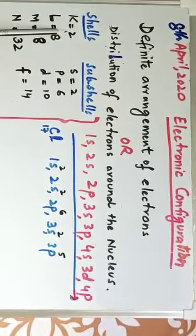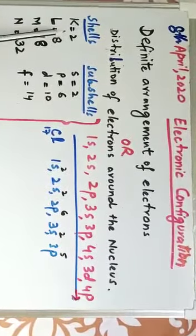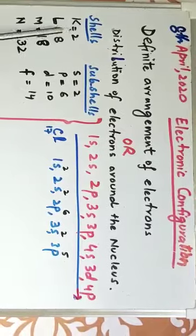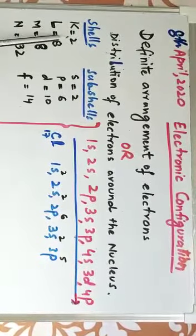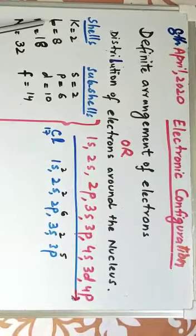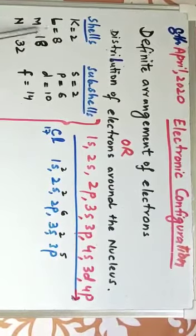K shell can accommodate two electrons as per rule. Again, I will recall the rules. First number shell, this is very close to nucleus, it can hold two electrons. Second shell is known as L, it can hold eight electrons.